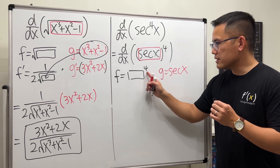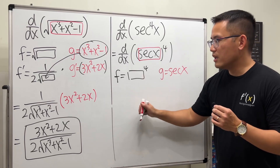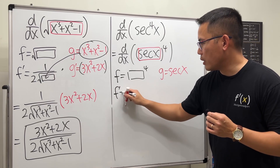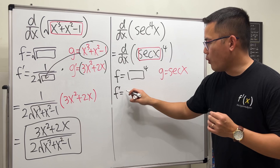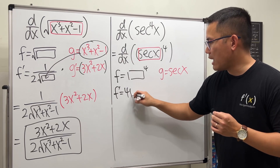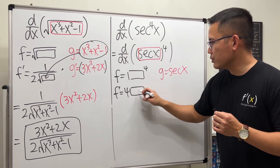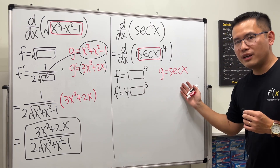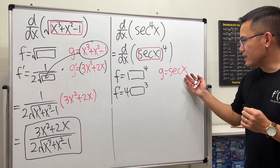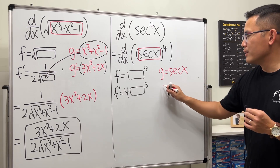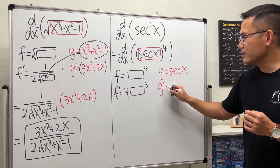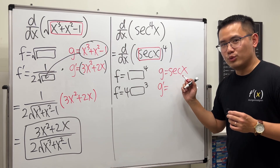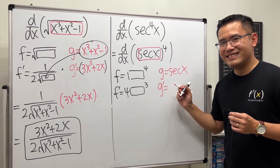Focus on f: take the derivative using just the power rule, and you get 4 times box to the third power — done. Then look at g: take the derivative. What's the derivative of secant x? Do you remember?